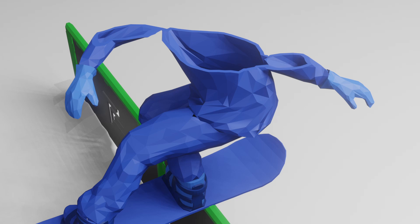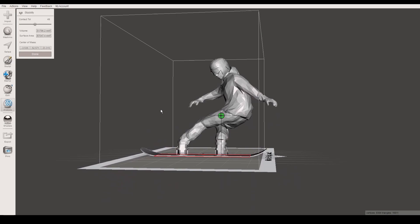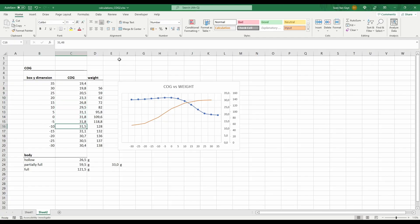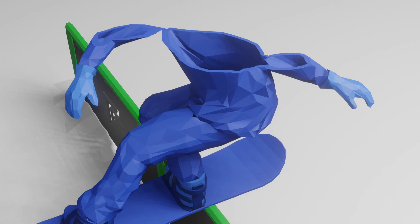So I made a model where I could change the boundary between the hollow and solid zone. For different positions of the boundary I analyzed the center of gravity in MeshMixer and Excel. And it turns out the optimum is somewhere around here.